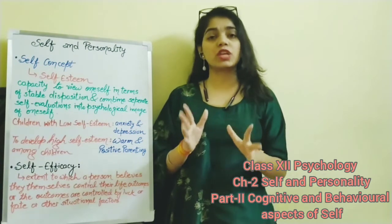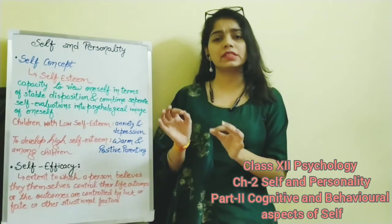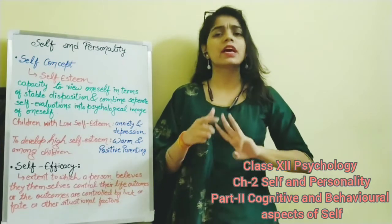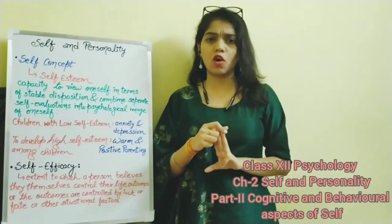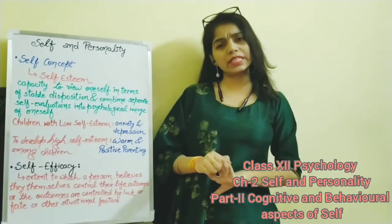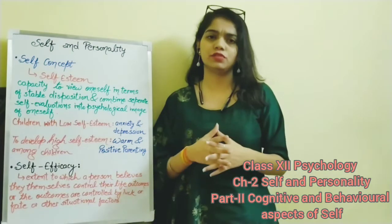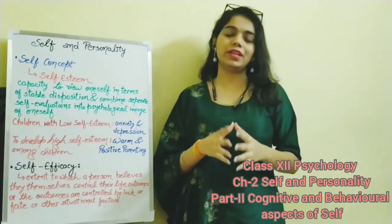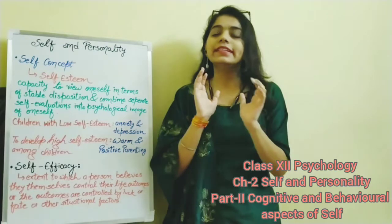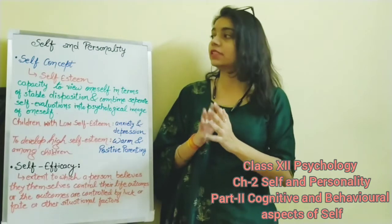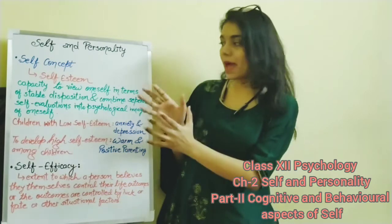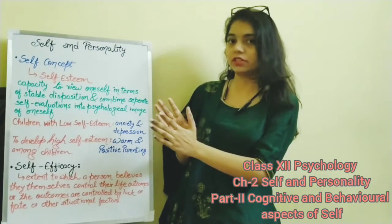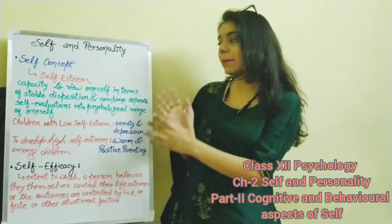It is to be noted that by the age of six or seven years, a child develops self-competence in four areas: social competence, academic competence, physical or athletic competence, and physical appearance. These refine with age.